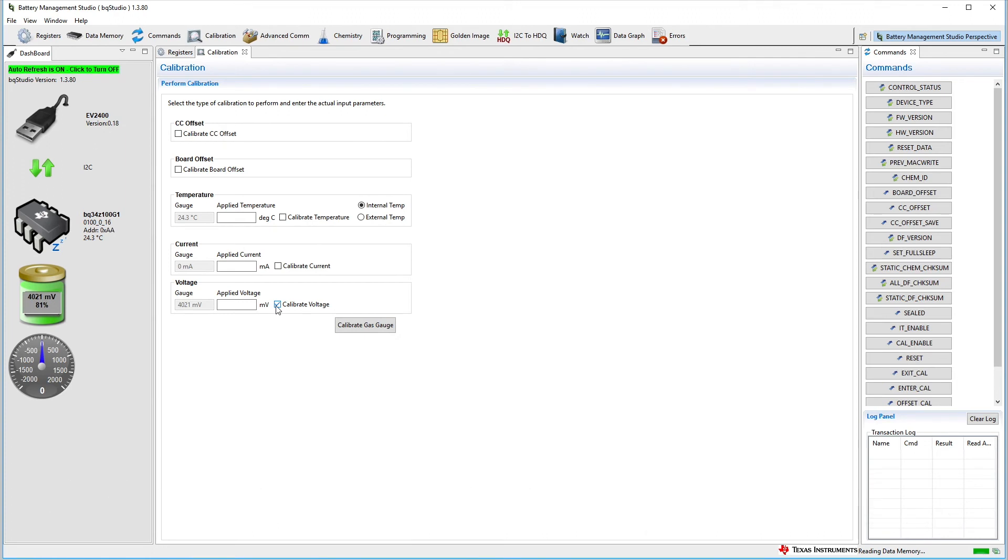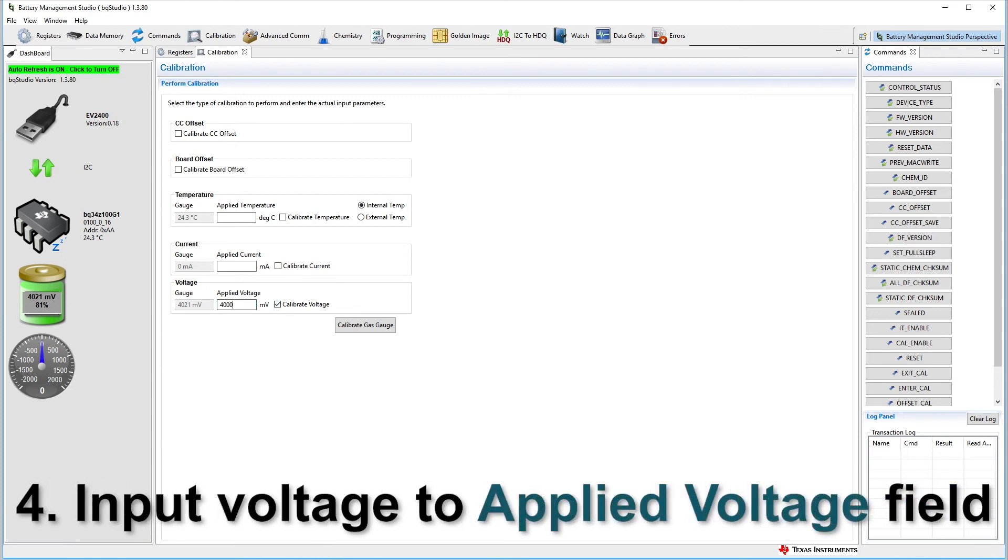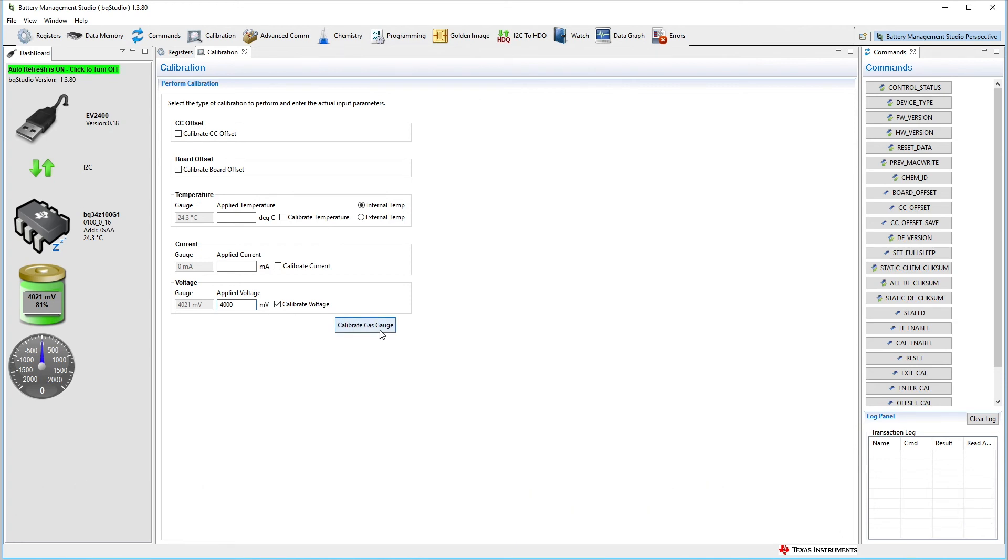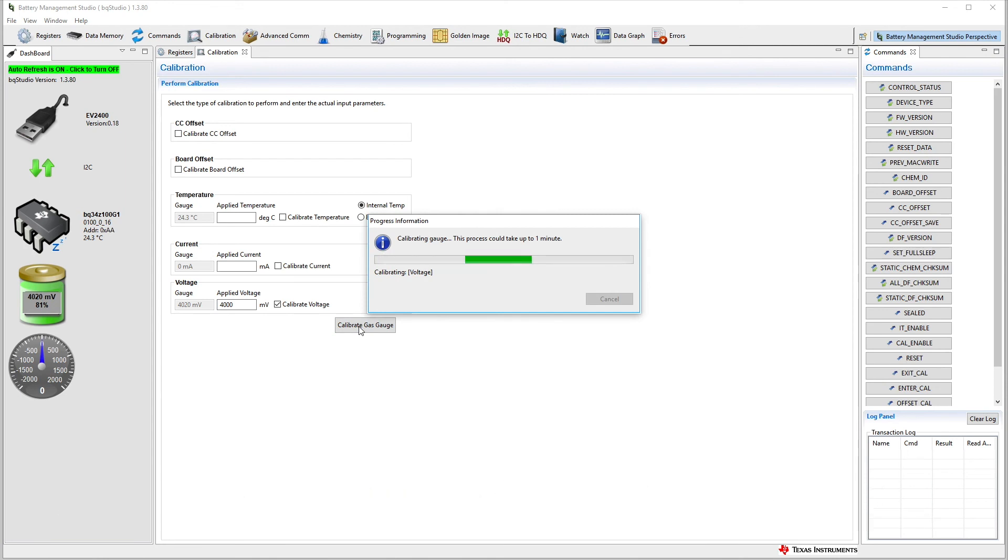With the multimeter, measure the applied voltage from the BAT plus to the BAT minus terminal on the evaluation module. Input the measured applied voltage to the applied voltage field in millivolts. Click on the calibrate gas gauge button to calibrate the gas gauge. A green check mark will indicate that calibration was successful and that the voltage divider parameter has been successfully updated.